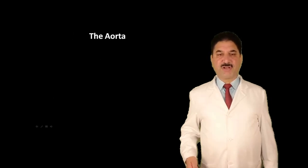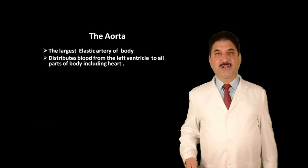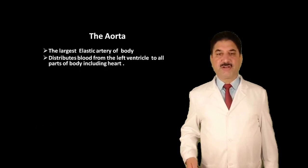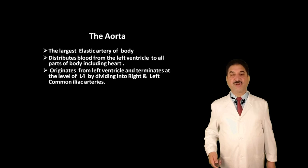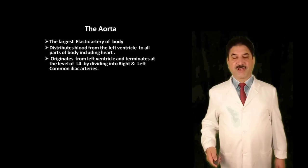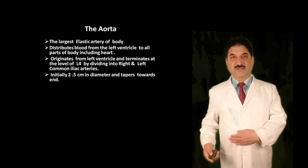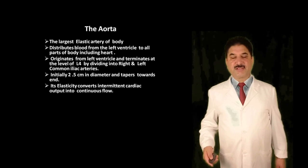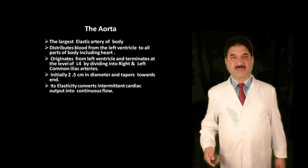Aorta is the largest elastic artery of our body. It distributes blood from the left ventricle to the whole body, including the heart. Aorta originates from the left ventricle and terminates at the level of L4 by dividing into right and left common iliac arteries. At the beginning it is 2.5 centimeters in diameter but tapers towards its termination. Its elasticity converts intermittent cardiac output into continuous blood flow in peripheral vessels.